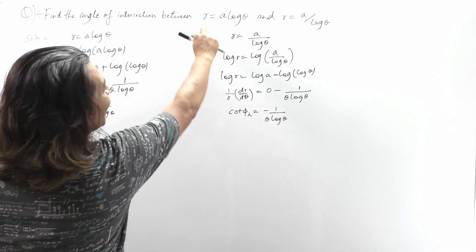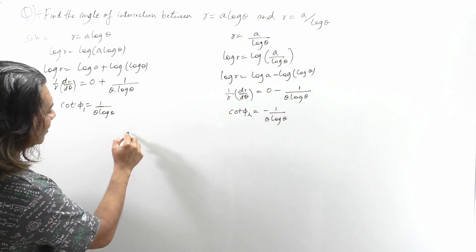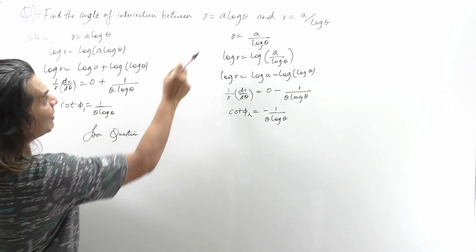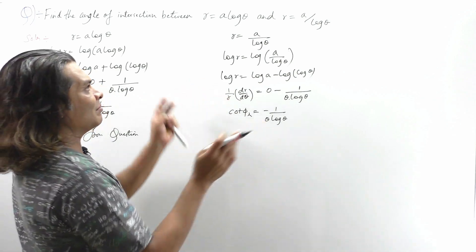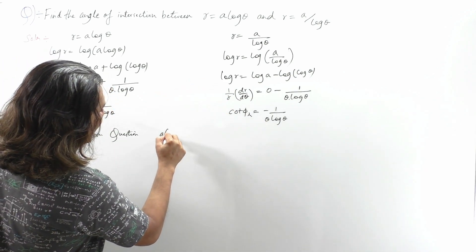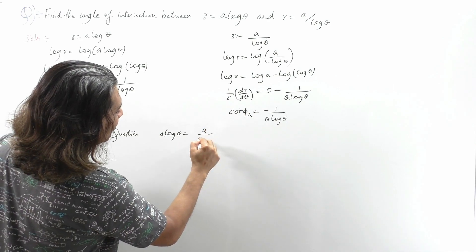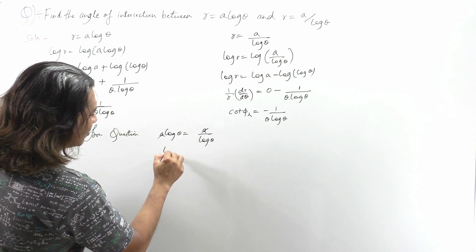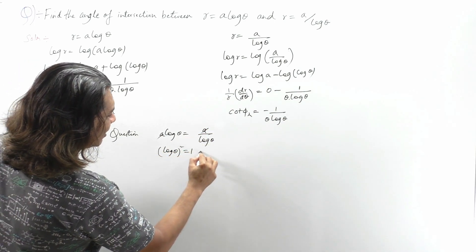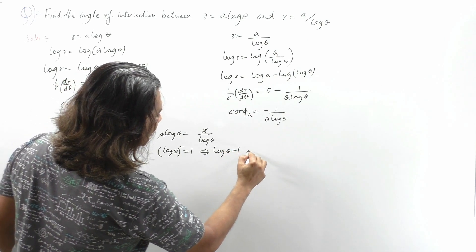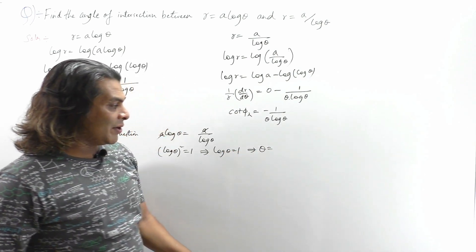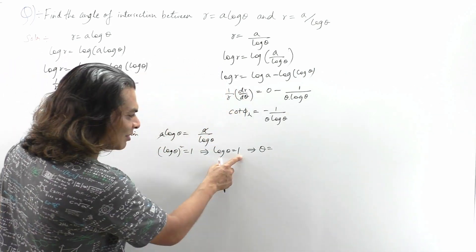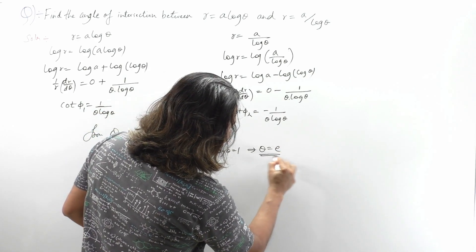Since both expressions give r, we compare directly from the question: a·logθ = a/logθ. The a cancels, giving (logθ)² = 1, so logθ = 1. Since log e = 1 always, we conclude that θ = e. I have now found the value of θ.